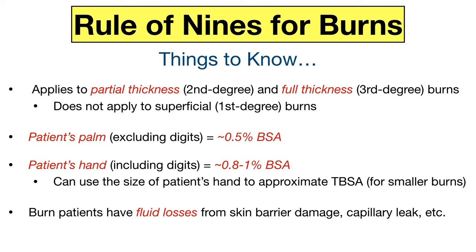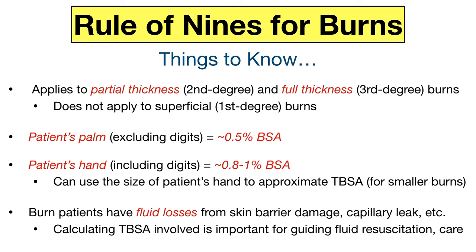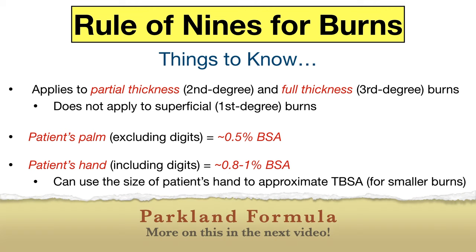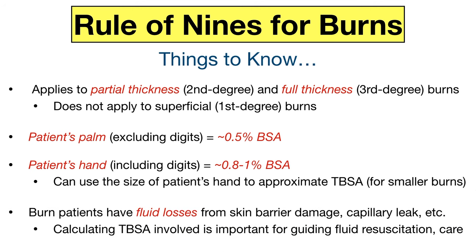Burn patients can have fluid losses from damage to the skin and loss of the skin barrier, as well as capillary leak. Figuring out the total body surface area involved is important in estimating fluid resuscitation along with the patient's overall care and potential need for treatment at a designated burn center. There are equations such as the Parkland formula that help you figure out how much fluid resuscitation the patient requires using their total body surface area involved — we'll go into that more in the next video.